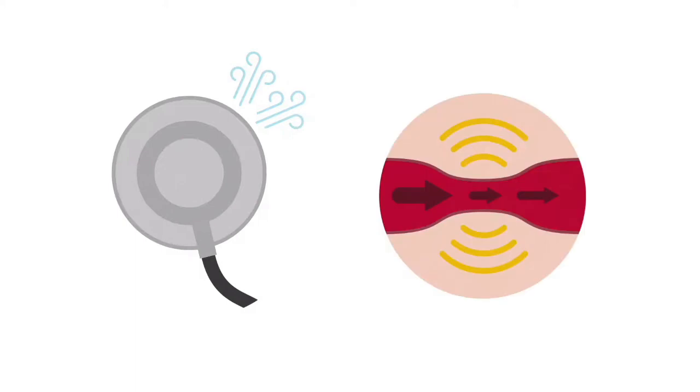Auscultation for bruits is an important part of the exam. A bruit is an abnormal swishing or blowing sound from blood flowing through a narrow or partially occluded artery — it can be thought of as a vascular murmur. Note that a bruit is auscultated or heard, versus a thrill which has similar pathology but is palpated. There are five areas in the abdominal exam to auscultate for a bruit: the aorta, bilateral renal arteries, bilateral iliac arteries, hepatic artery, and splenic artery.